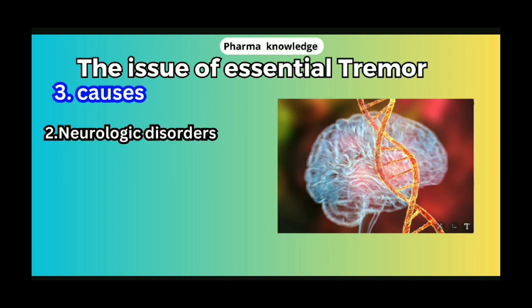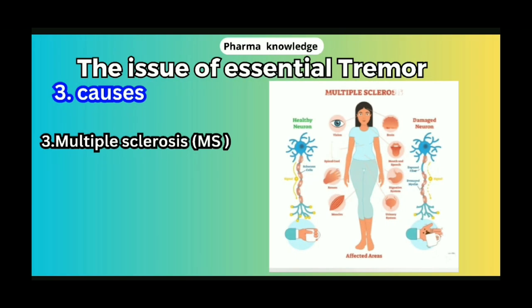The second cause is Neurological Disorders. Neurons in the brain are not functioning properly. Neurological disorder affecting the brain can lead to tremors, including conditions such as multiple sclerosis.